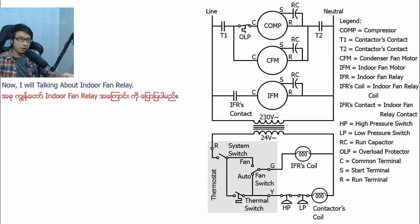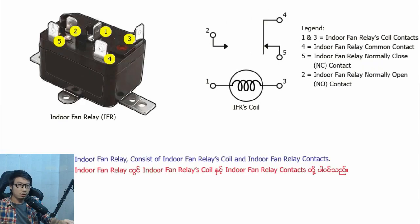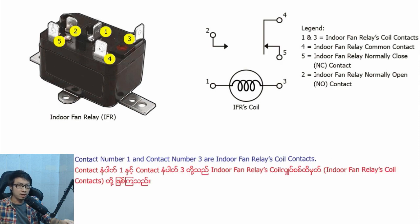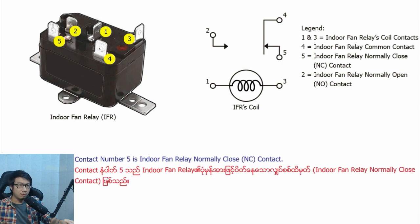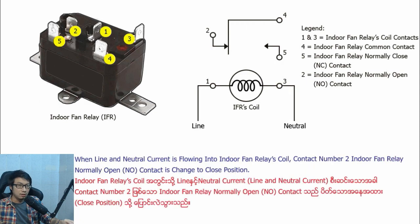Now I will talk about the indoor fan relay. The indoor fan relay consists of the indoor fan relay coil and indoor fan relay contacts. Contact No. 1 and Contact No. 3 are the indoor fan relay coil contacts. Contact No. 4 is the indoor fan relay common contact. Contact No. 5 is the indoor fan relay normally closed contact. Contact No. 3 is the indoor fan relay normally open contact. Contact No. 2 is the indoor fan relay normally open contact, which is changed to the closed position.